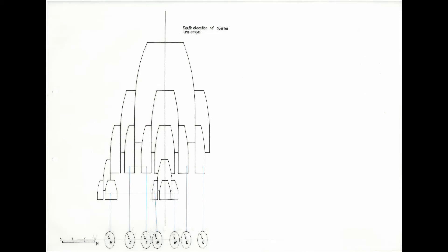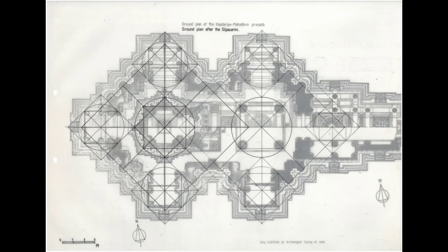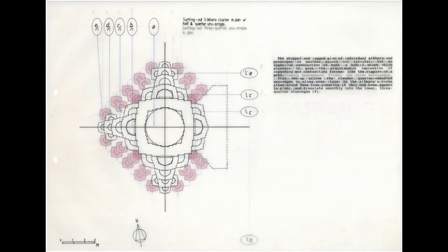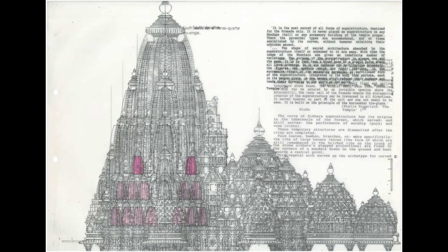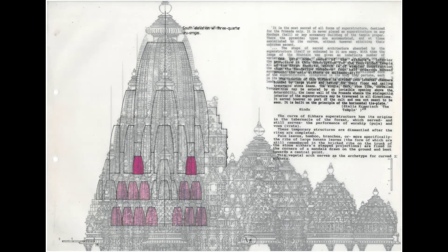Putting this all together, we get a setting out of the sikara cluster with half uru shringras, to which we add the quarter uru shringras. Working backwards, we rework the plan with the main sikara cluster with half and quarter uru shringras. Here is the elevation of the sikara cluster worked out using geometry, compared with that worked out through surveying — only slightly different, but feels more realistic compared to photographs.